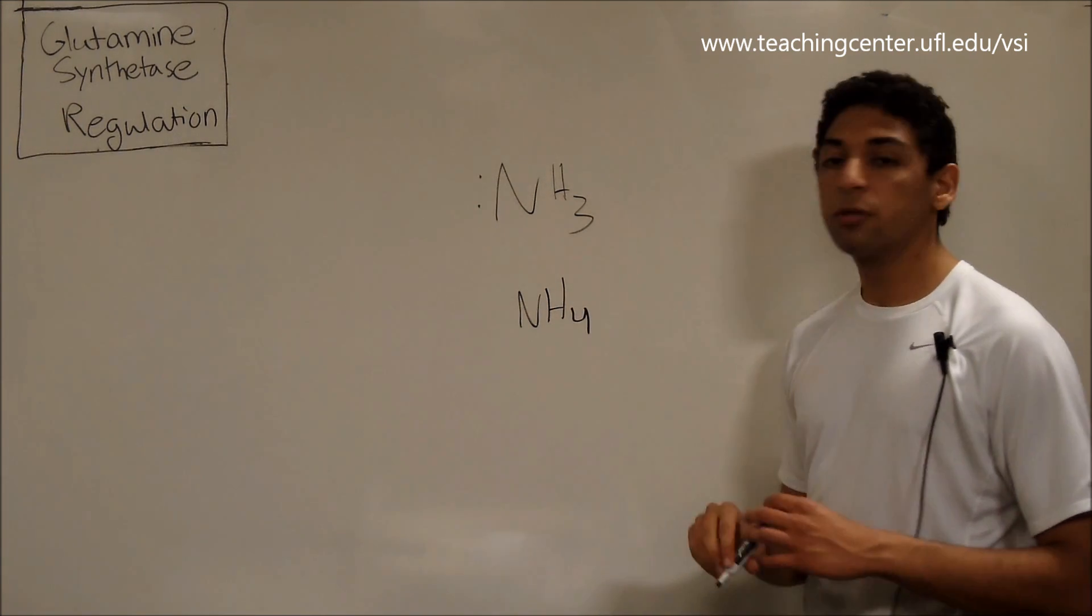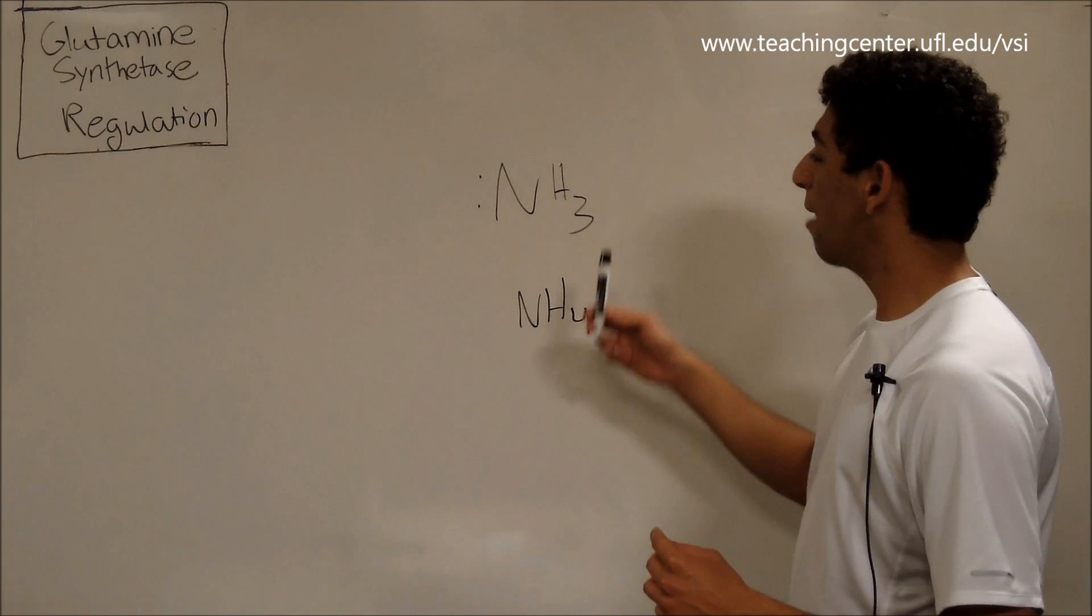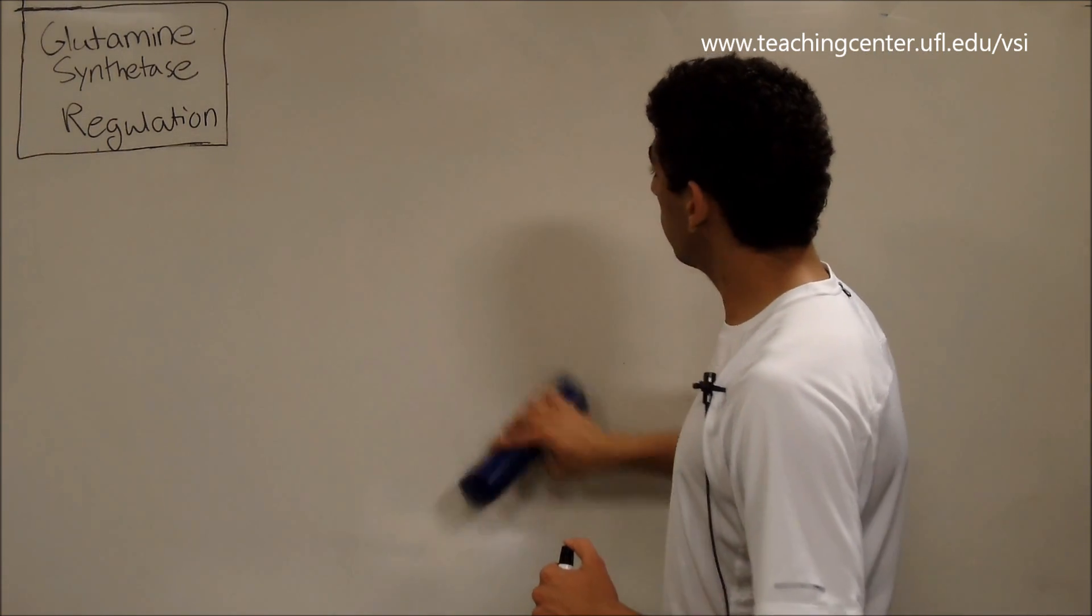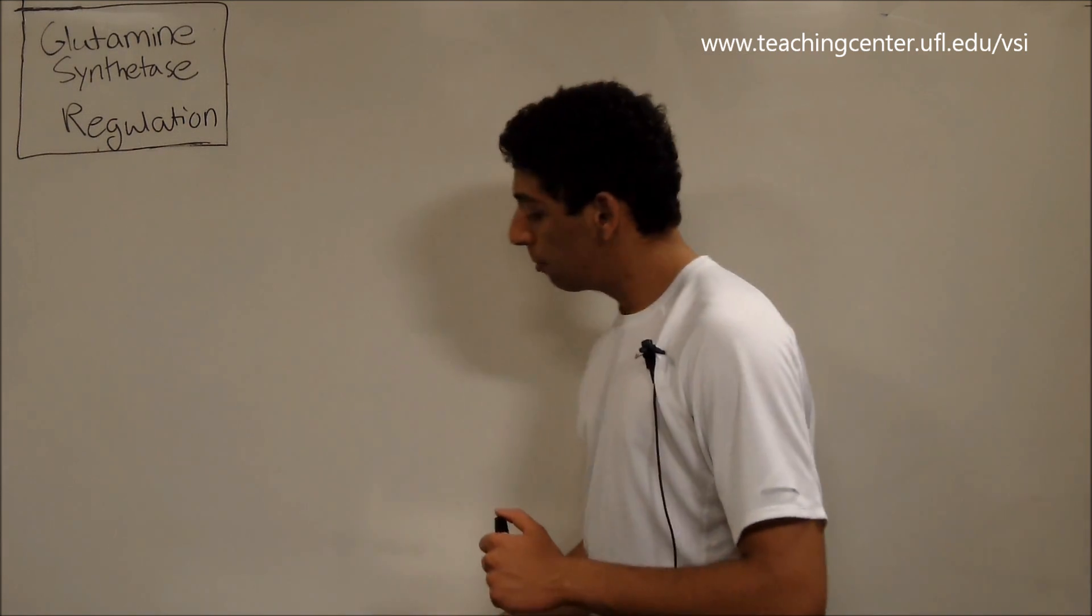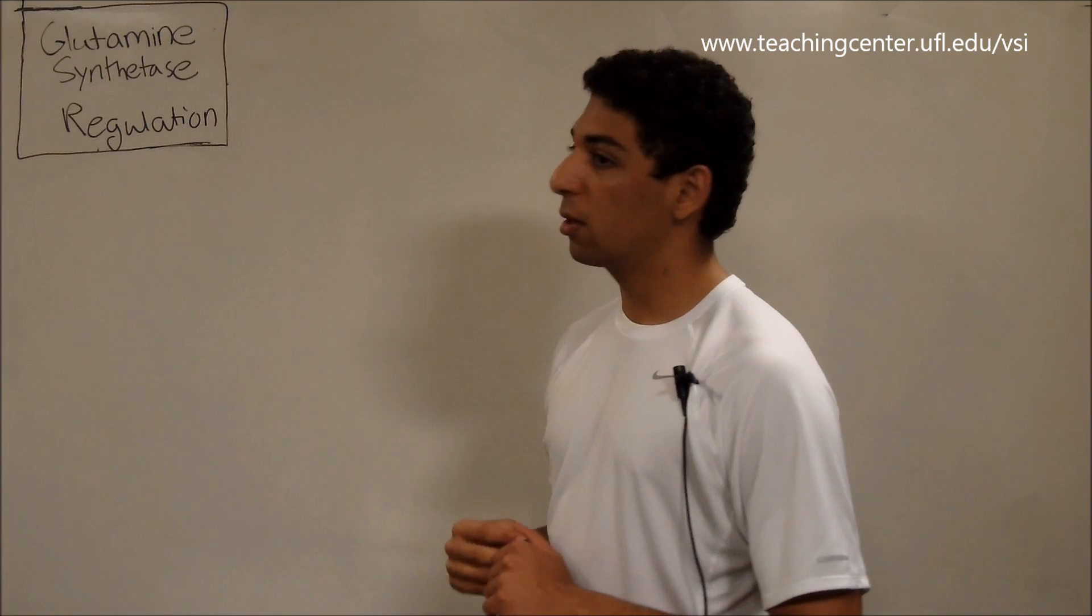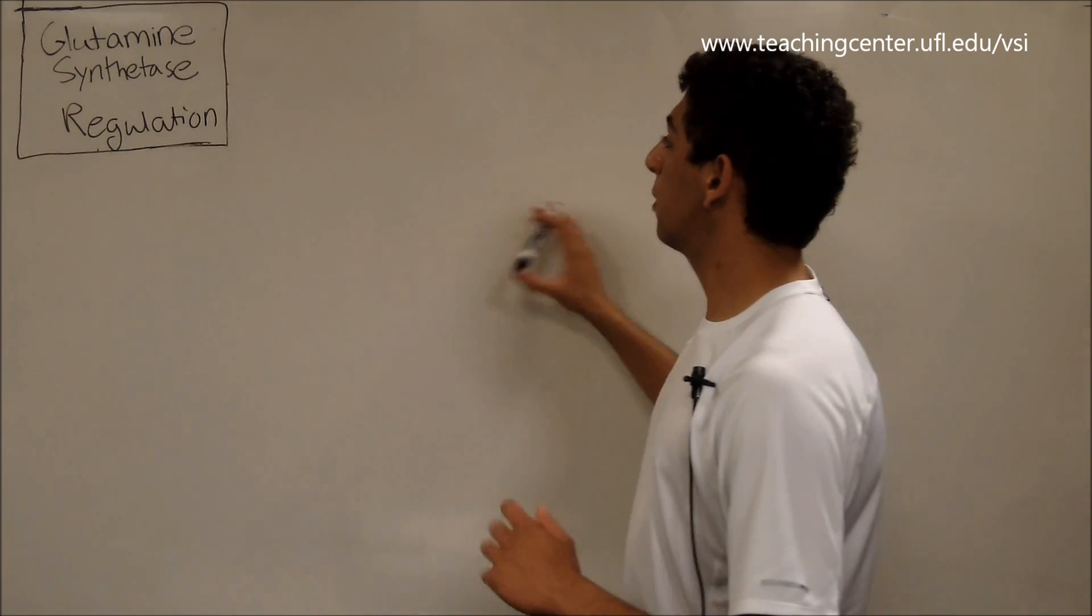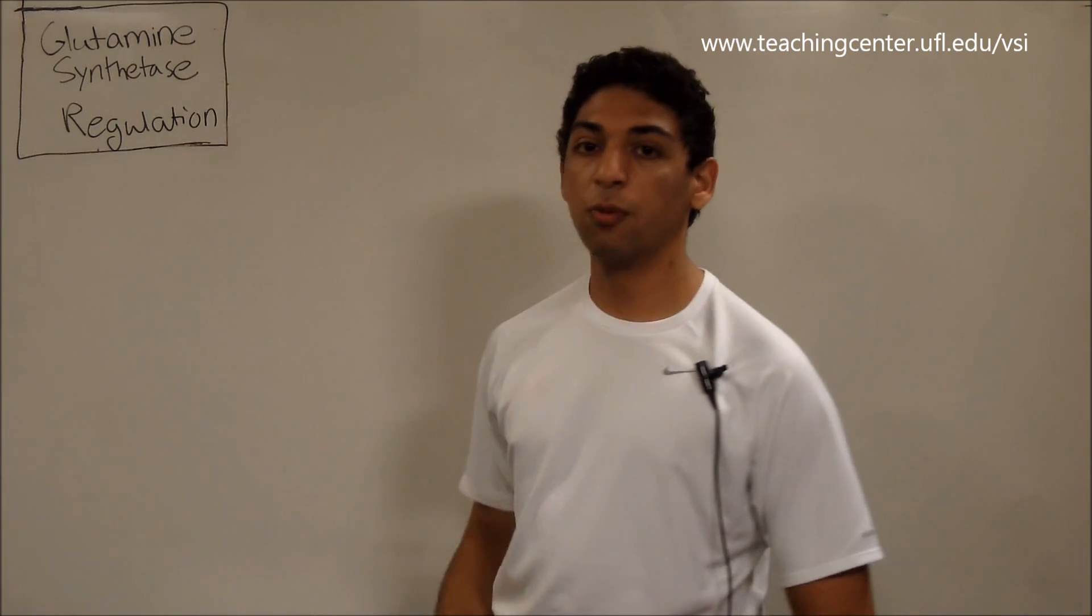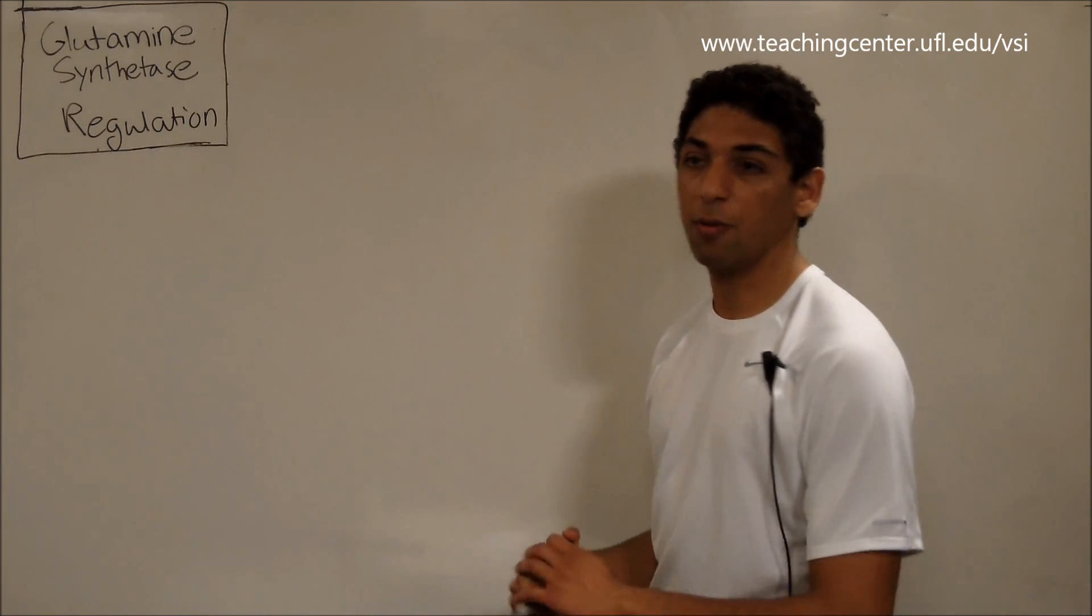So for those two reasons, we really can't have ammonia flowing around in our bloodstream. But we do need to transfer nitrogen between organs and between different cells. And so the way we do it without causing all of these bad side effects of having ammonia floating around is through glutamine, which is one of the amino acids whose structure you guys should remember.